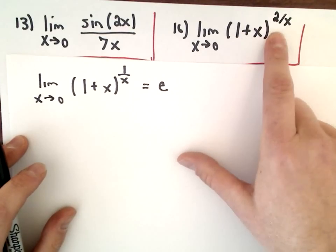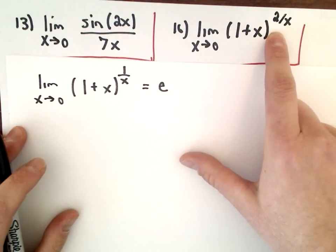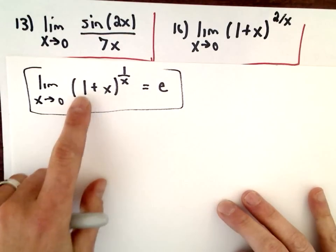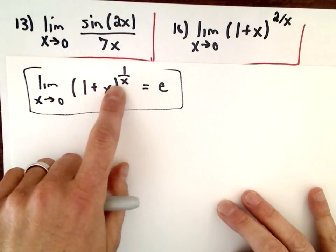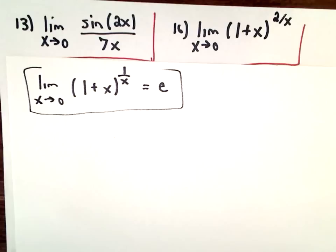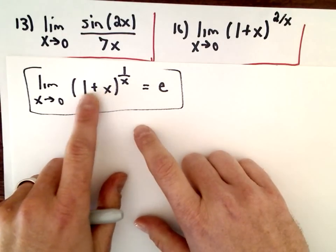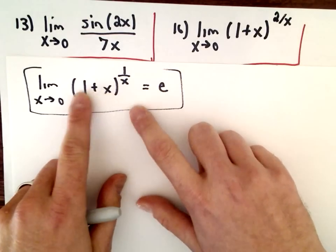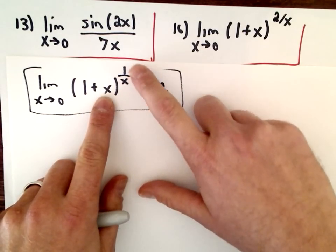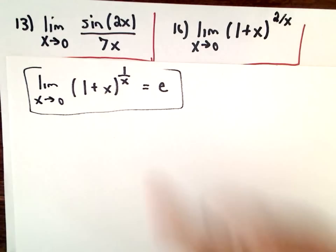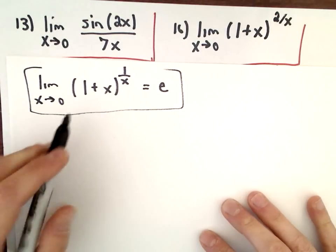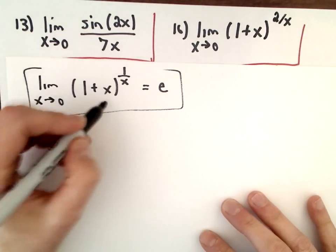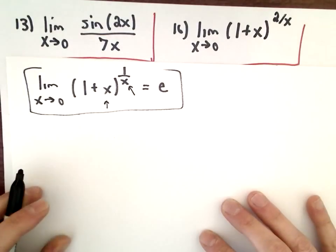The limit as x approaches 0 of (1+x)^(2/x). The special limit result we're going to use is: limit as x approaches 0 of (1+x)^(1/x) equals e. If it was 1 plus 2x, you would want 1 over 2x. If it was 1 plus 10x, you'd want 1 over 10x. You want a 1, a plus, and whatever's here should match what's in the denominator.